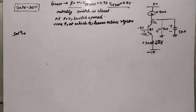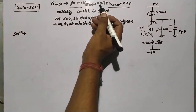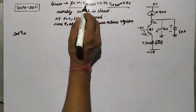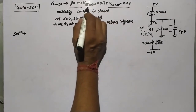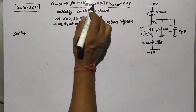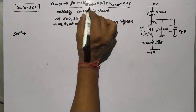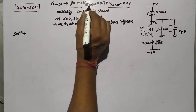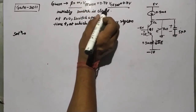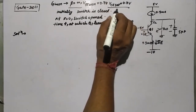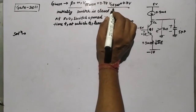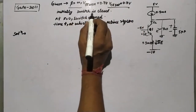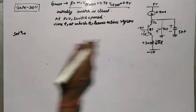Hello everyone, today we will discuss a GATE 2011 two-mark question based on BJT. It is given that β equals infinity and VBE equals 0.7 volt. VBE equals 0.7V when the base-emitter junction is forward biased — that is, when it is ON. This applies in the active region and saturation region. It is also given that VCE(sat) equals 0.7 volt in the saturation region.